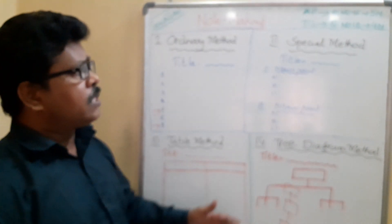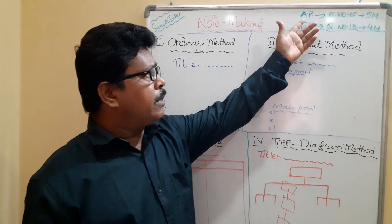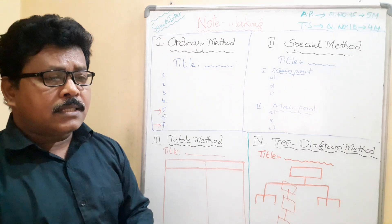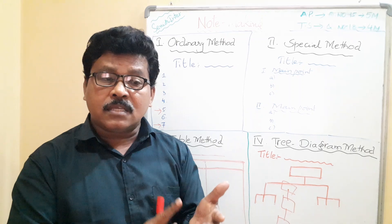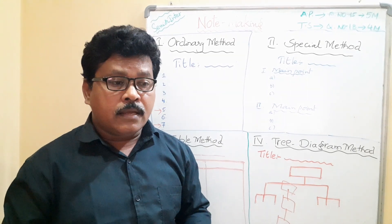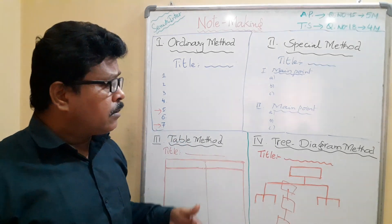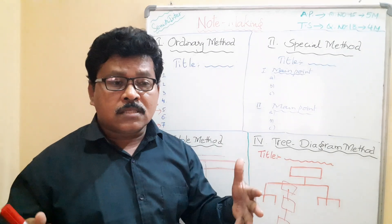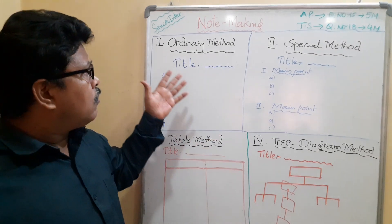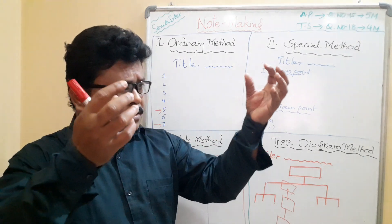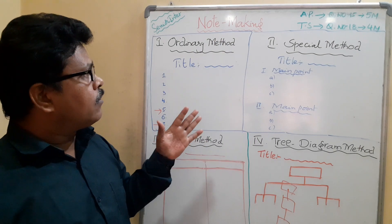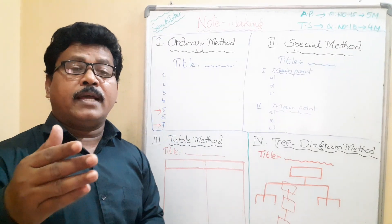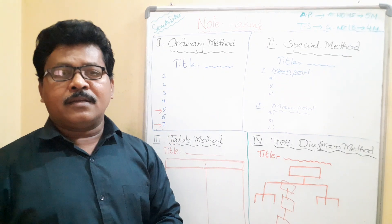Using these methods you can score full marks — five out of five in AP or four out of four in TS. Passages are usually related to studies, cracking exams, success tips, computers, GK, interview techniques, or yoga. Note making is a very easy topic — just take out important points, write a title, and list the points. I hope this video is useful. Please like, share, comment, and subscribe to my channel. See you very soon — take care, bye!